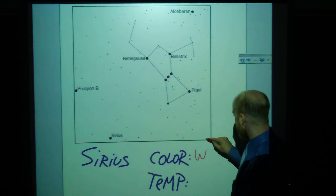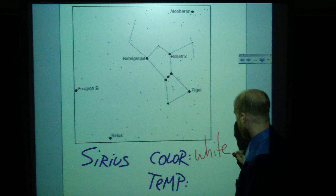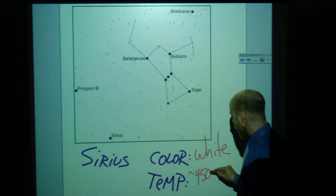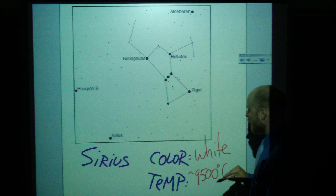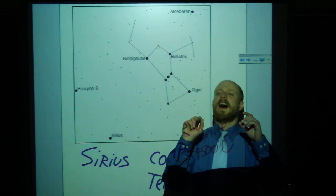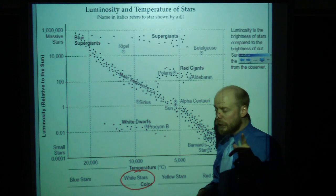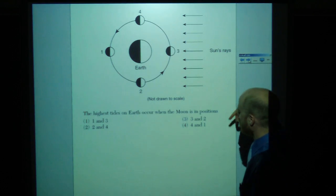Color. What did I say? White. Temperature. Let's say around 9,500 degrees C. Which is hot. Maybe not for a star. But for you and I, that's unbelievably hot.